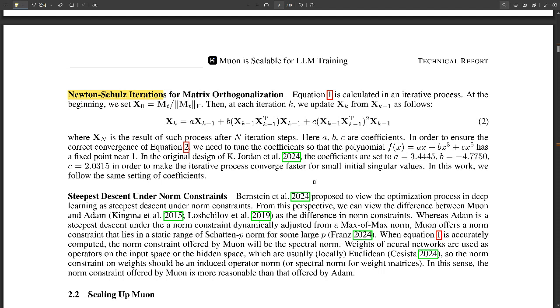Oh yeah, sure. FLOPs stands for floating point operations per second. And it's basically a way to measure how much computational power you need for a task. So the lower the FLOPs, the more efficient the process is, which means you're spending less time and money on training.